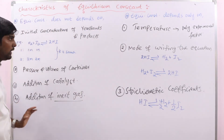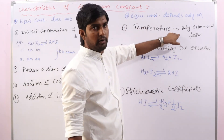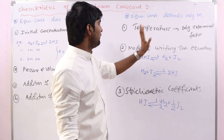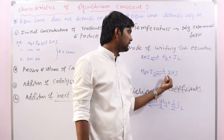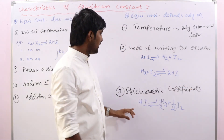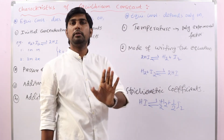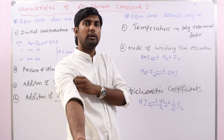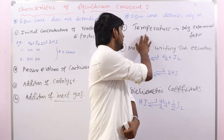So these factors — initial concentrations, pressure, volume, catalyst, inert gas — do not influence the value of K. Temperature, mode of writing the equation, and stoichiometric coefficients do influence the value of K. Temperature is the experimental factor; the other two are theoretical factors. After calculating K for one form, simply reversing the reaction gives the reciprocal of the equilibrium constant.